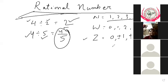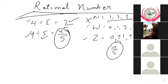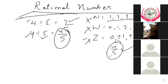But 4 upon 5 — which category does it come in? Is it natural, or whole number, or integer? It doesn't fit any of these. So this category is called the rational number.